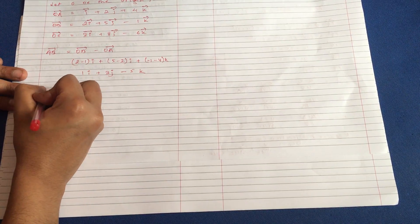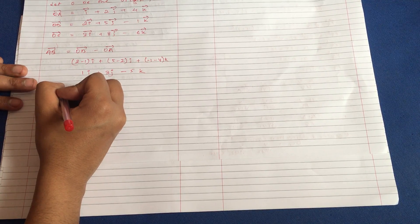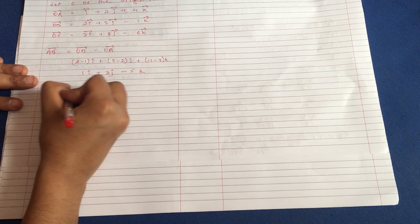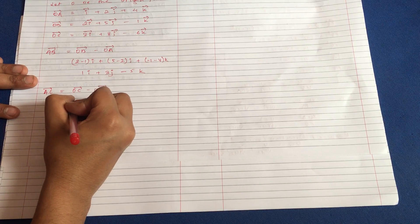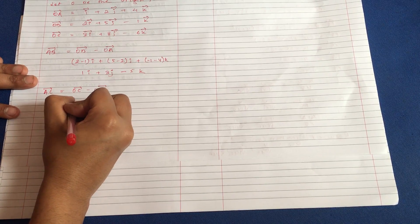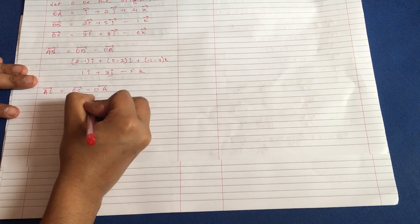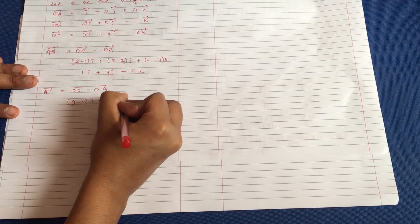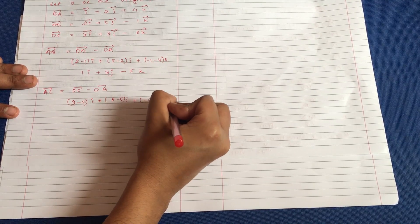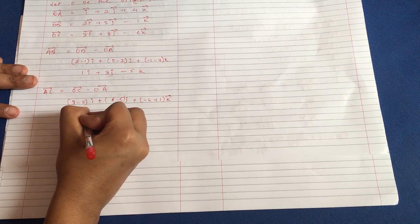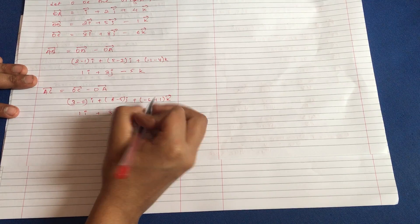Now what we do is find AC. AC is a similar thing, that is OC minus OA. So what is OC? Like 3 minus 2i plus 8 minus 5j plus the k component, this is 1i plus 3j minus 5k, the same thing.